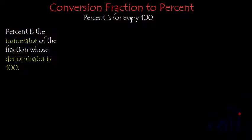So if we want to convert a fraction into percent, we will write an equivalent fraction for the given fraction in such a way that we get denominator as 100. And then numerator is called percent.